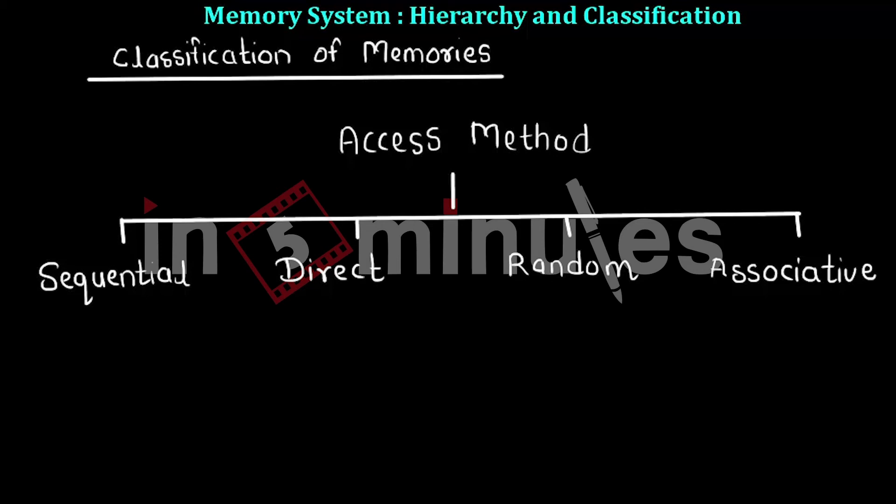In associative memories, the contents of the memories are accessed based on the data present at that location instead of address. While accessing the memory in associative manner, we compare the data of the memory locations instead of their address. These are the different access methods.